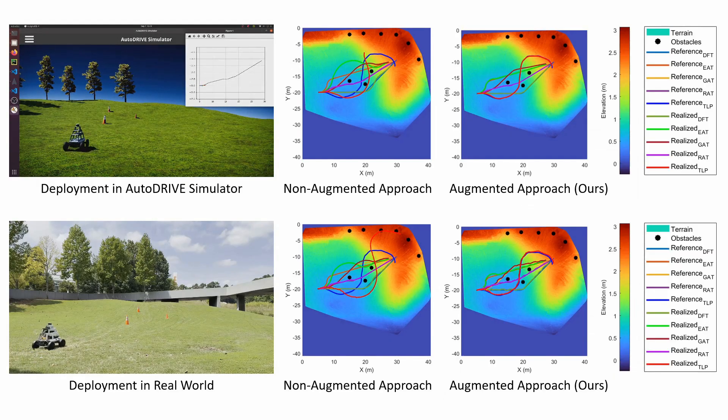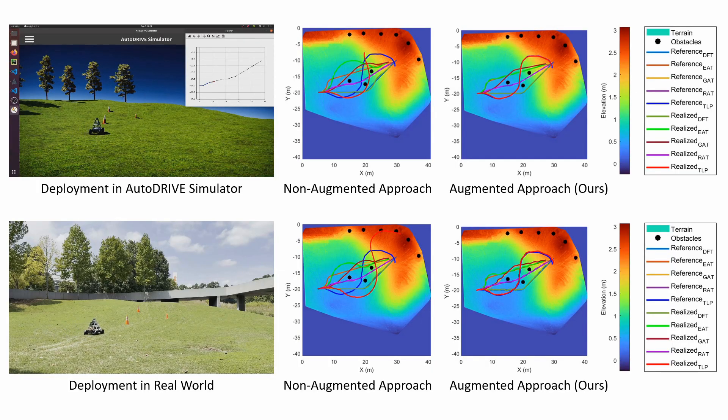The capabilities of the proposed methodology are demonstrated through an autonomous navigation problem of a one-fifth scale vehicle, where a terrain-informed planner is employed for global mission planning.